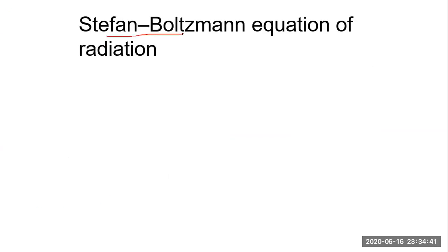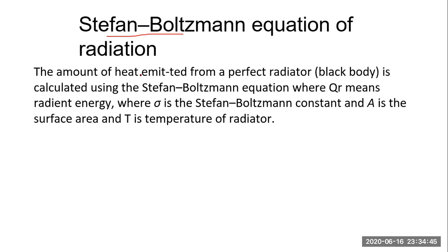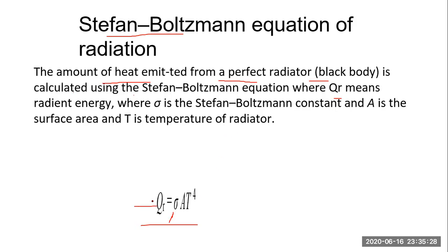There is also the Stefan-Boltzmann equation for radiation. According to Stefan-Boltzmann, the amount of heat emitted from a radiator — mostly a black body — is calculated using this equation: Q̄ = σ·A·T⁴, where Q̄ is the radiant energy, σ is the Stefan-Boltzmann constant, A is the surface area, and T is the temperature of the radiator. You get the radiant energy by multiplying the surface area by the temperature of the radiator raised to the fourth power. These are our three equations for conduction, convection, and radiation.